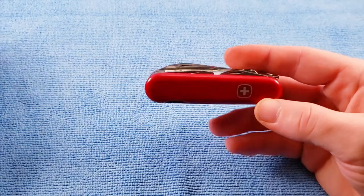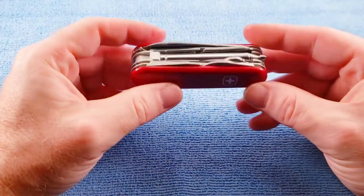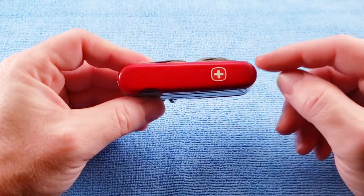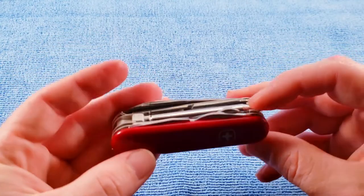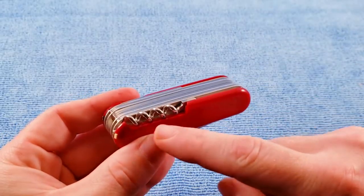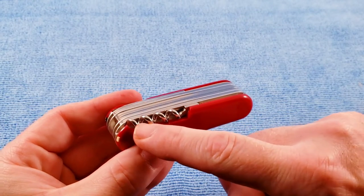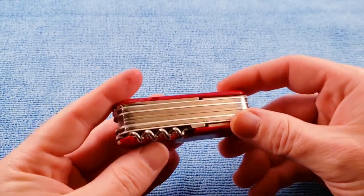Some related models to this would be the Wenger Director that has the exact same tool set but replaces the corkscrew with a back layer Phillips.